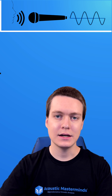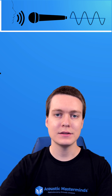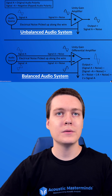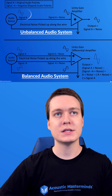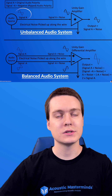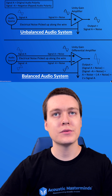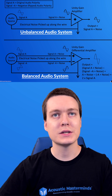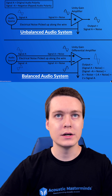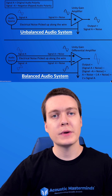We can think of that as going in and out, creating the electrical response. In an unbalanced audio system, we only have signal A coming from the audio source. As it goes through the line, electrical noise is picked up along the wire, resulting in a representation of the signal plus the noise being output.